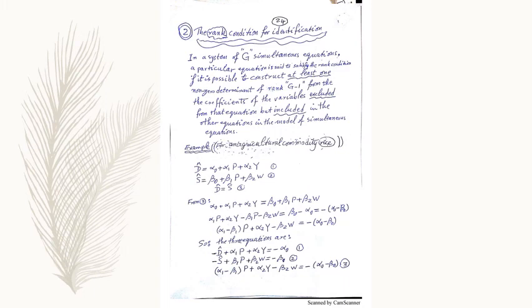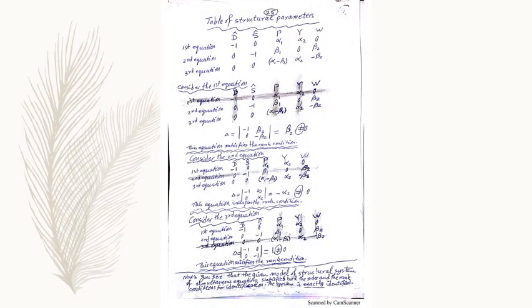Page 24, the rank condition for identification. In a system of G simultaneous equations, a particular equation is said to satisfy the rank condition if it is possible to construct at least one non-zero determinant of rank G minus 1 from the coefficients of the variables excluded from that equation but included in the other equations in the model of simultaneous equations. This is quite clear in the example given on pages 24 and 25.